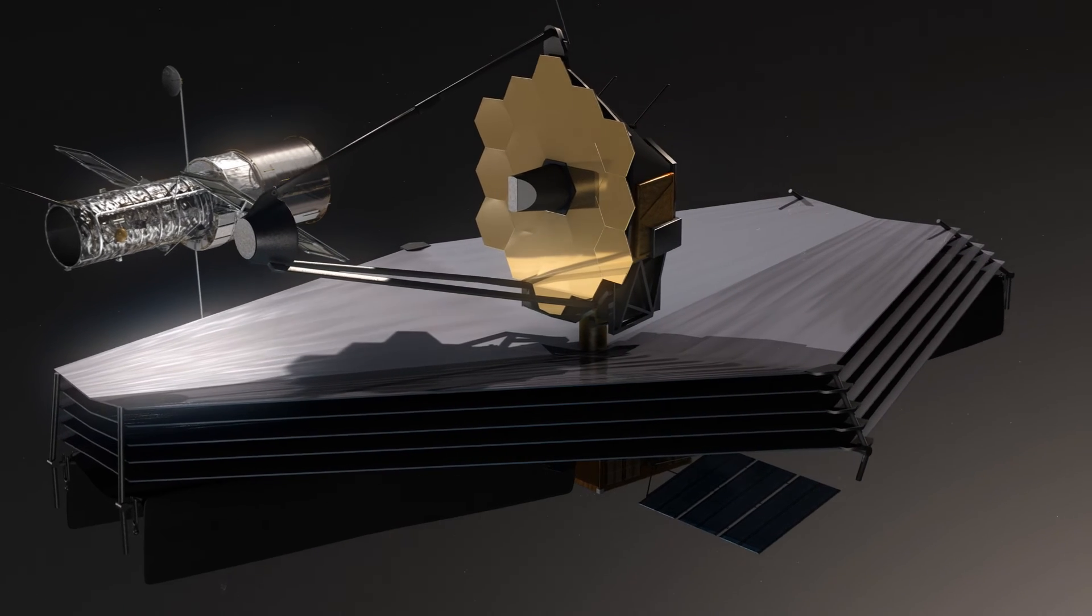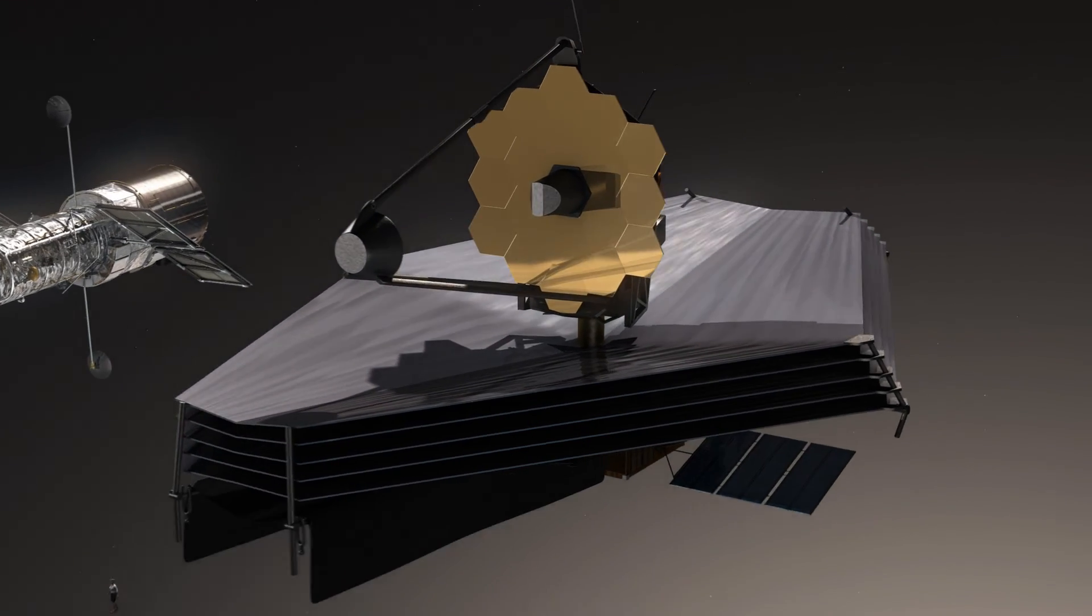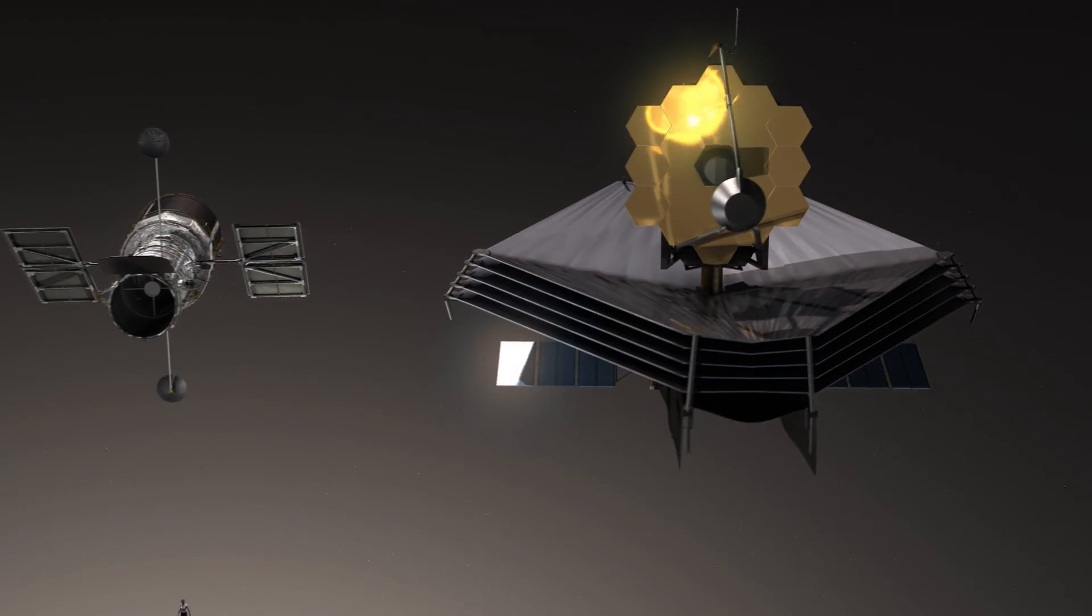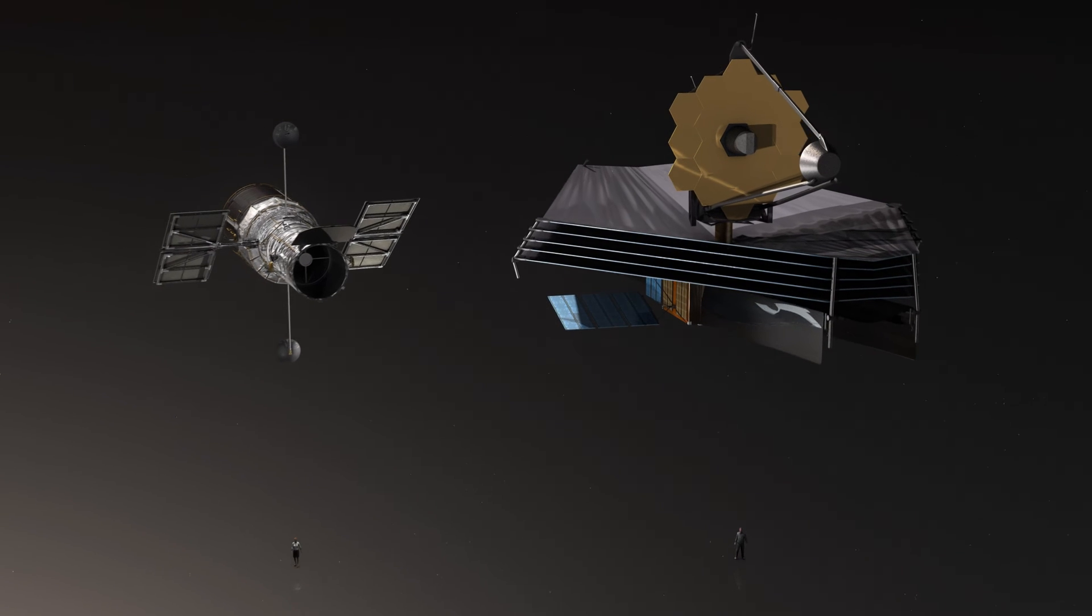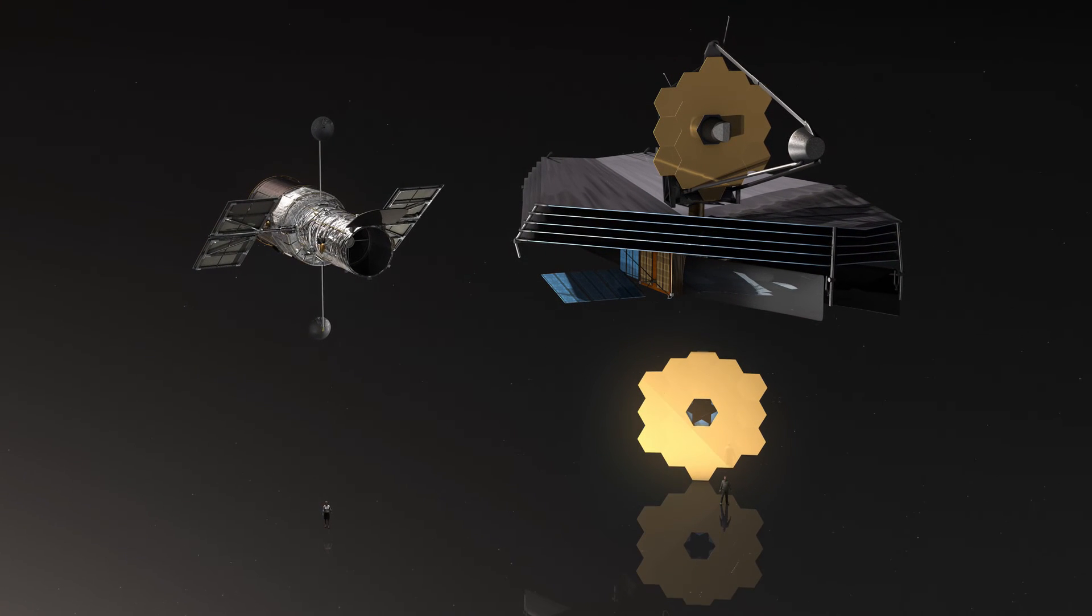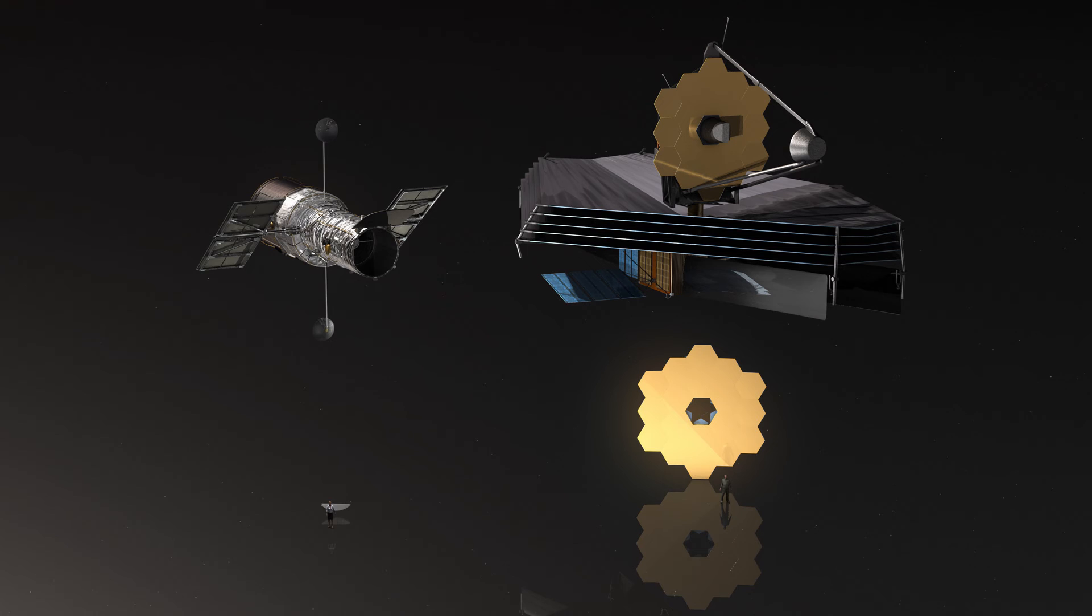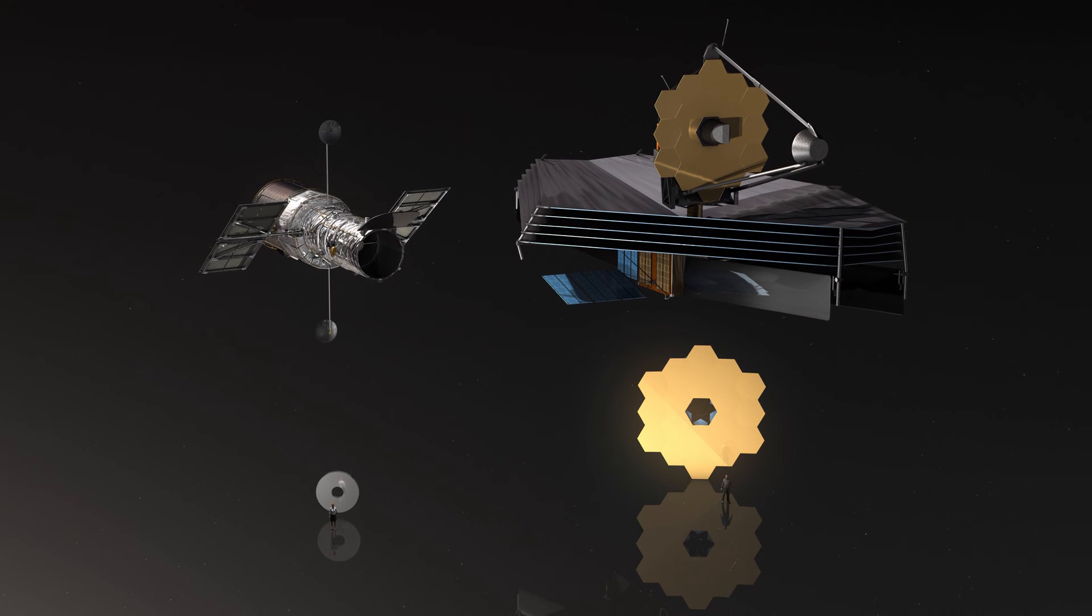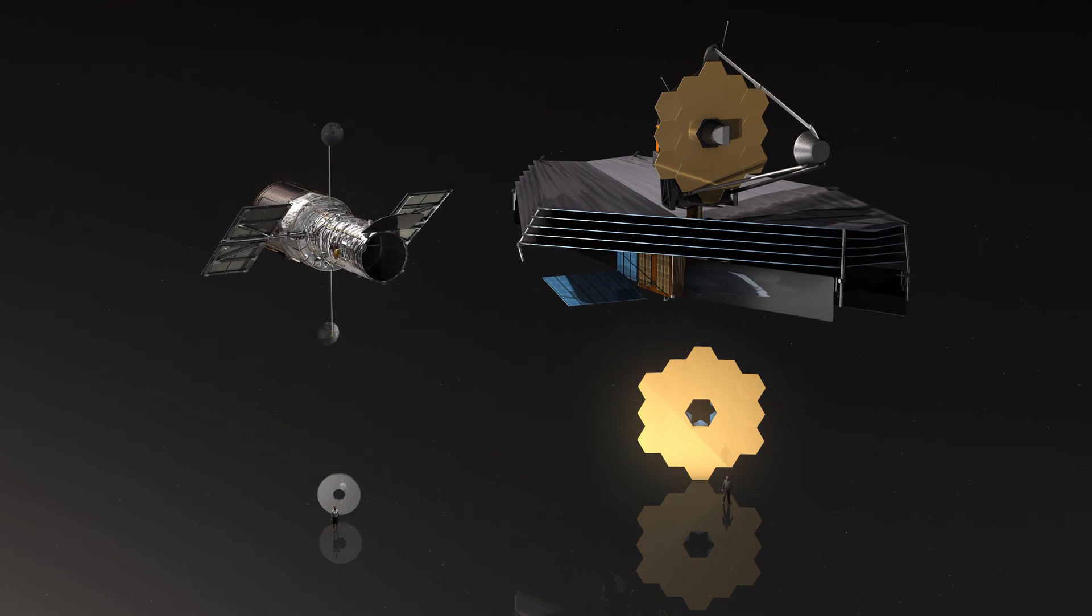That's why researchers will need space telescopes much larger than Hubble to collect the feeble signal as the starlight passes through these small planets' atmospheres during a transit. A larger telescope collecting area will allow for effective detection of these faint signals.